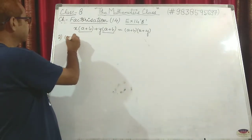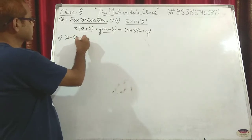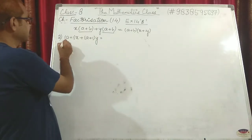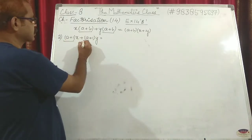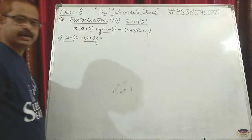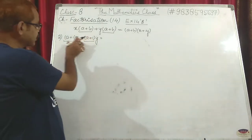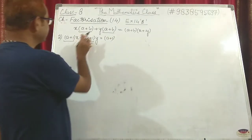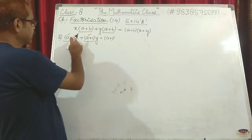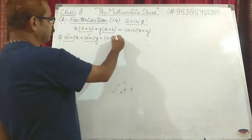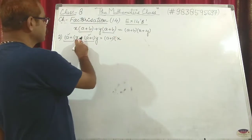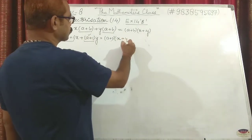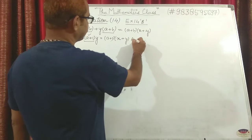Question 2 of exercise 14b: (a+1)·x + (a+1)·y. You can see (a+1) is present in both terms. Take (a+1) common — it has been removed from both. What is left from the first term? Only x. Then plus. What is left from the second term? Only y. Answer: (a+1)(x + y).